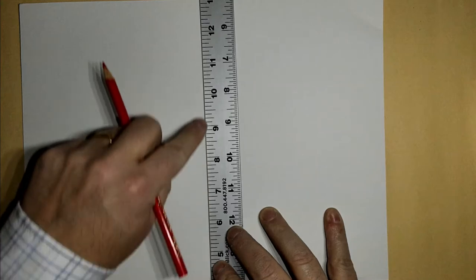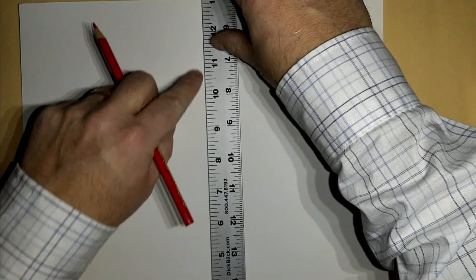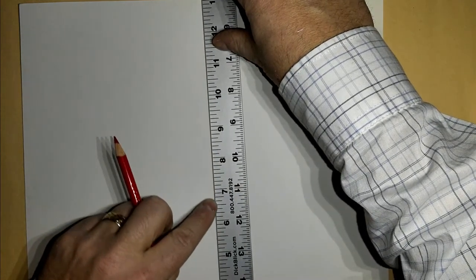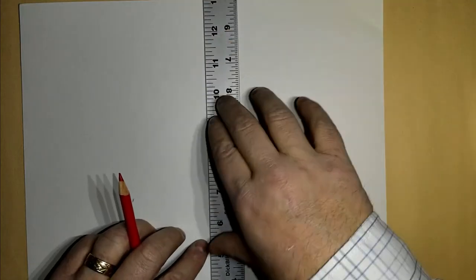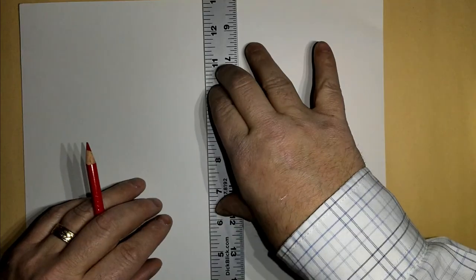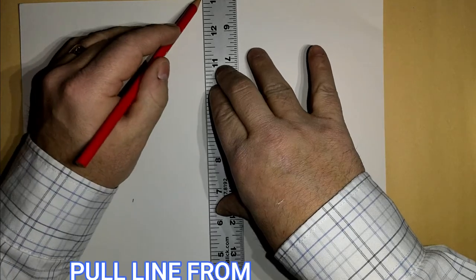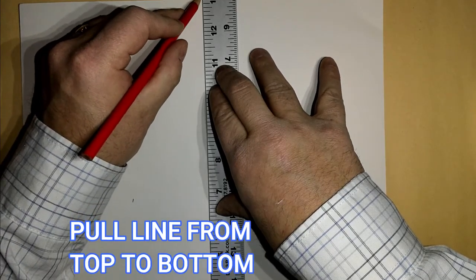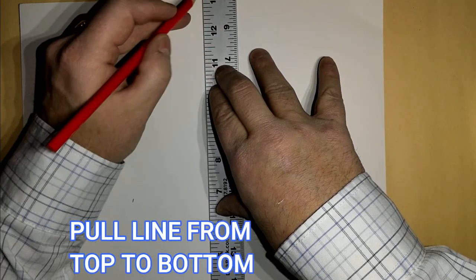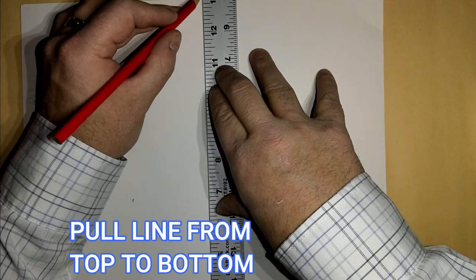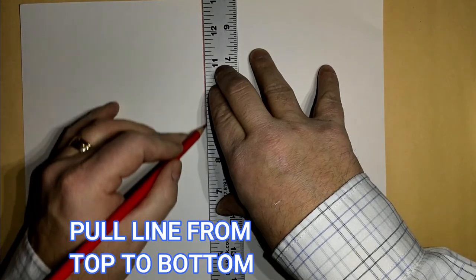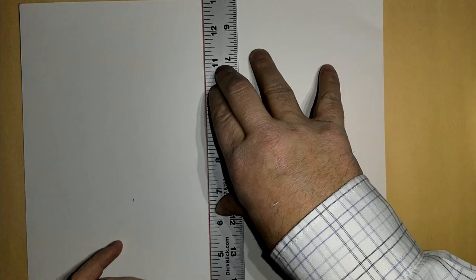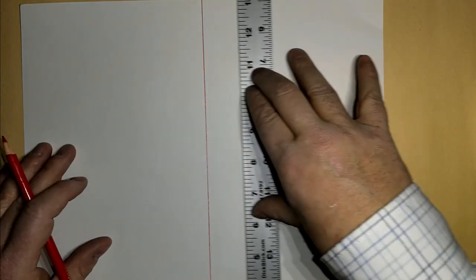If I hold at the bottom, the top of the ruler could move. If I hold at the top, same thing, the bottom could move. So, I want to hold in the middle with the tips, push forward, put my weight on there, start at the top, and just use my ruler as the guide, push the pencil into the ruler, and bring it from the top down, pull it right towards myself. There's one line.